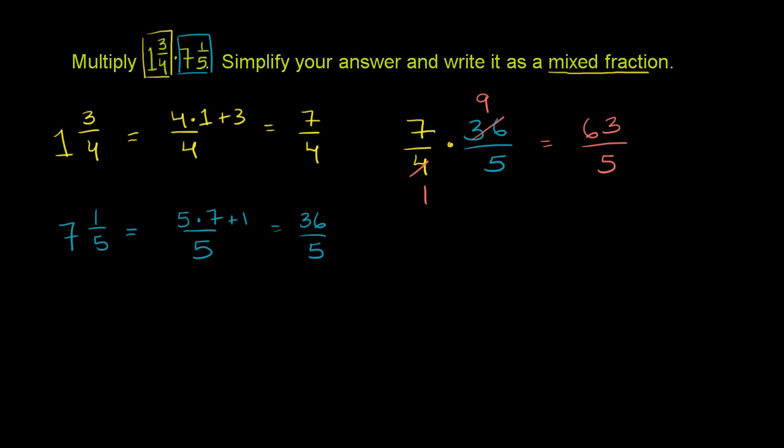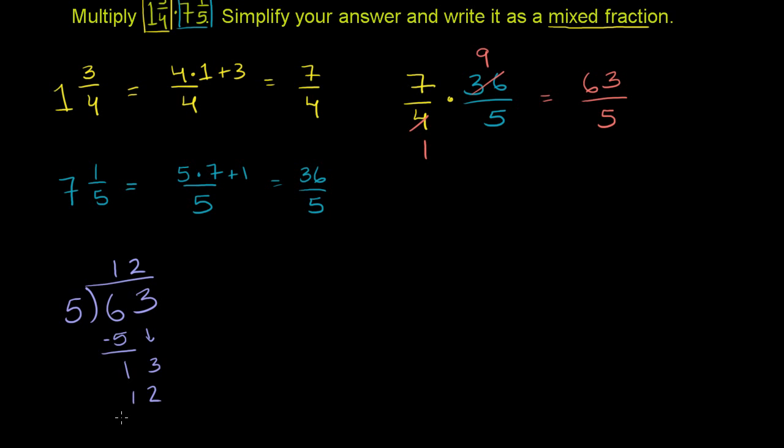So what are 63 fifths? So to figure that out, we take 5 into 63. 5 goes into 6 one time. 1 times 5 is 5. You subtract. 6 minus 5 is 1. Bring down the 3. 5 goes into 13 two times. And you could have immediately said 5 goes into 63 12 times, but this way, at least to me, it's a little bit more obvious. And then 2 times 5 is 10. And then you subtract, and you have a remainder of 3.